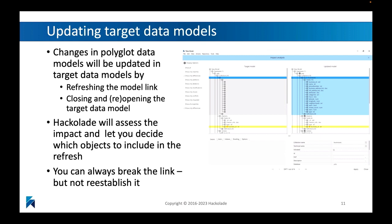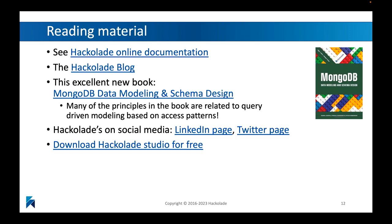If at all possible, we'd like updates to the target model to be driven by the master, by the polyglot model. When the polyglot model changes, those changes will be updated in the target data model by doing a manual refresh — there's a sync option in the target data model — or by closing and reopening the target data model, at which point it will ask if you want to update. When it asks that question, it will present you with an impact analysis. You can see this on screen — it tells you what will happen if you update this target model from the master, what you want to approve or allow, or whether you potentially want to break the link.